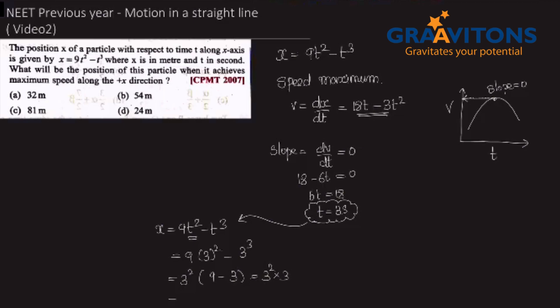The position at t equals 3 seconds is equal to 54 meters. This is the correct answer.